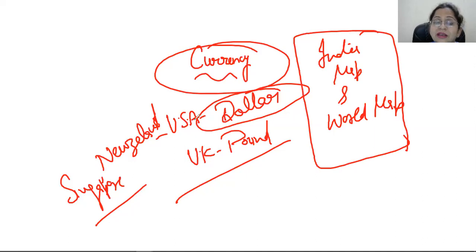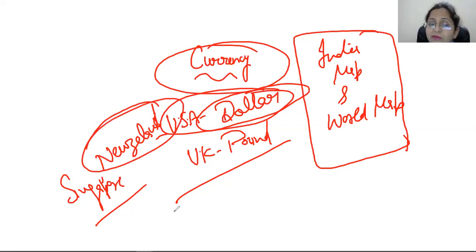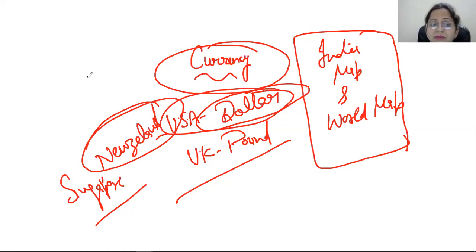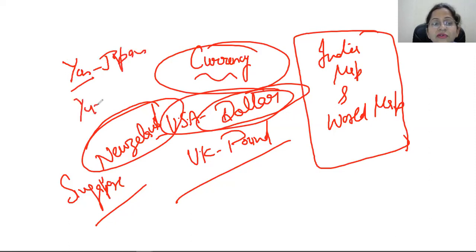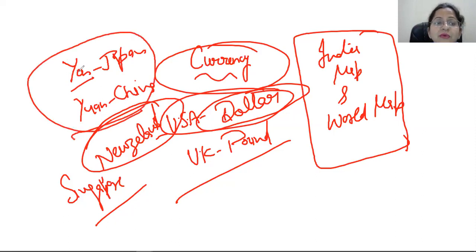The value of the US dollar is not equal to the New Zealand dollar — the value will be different from country to country, but the currency name will be the same. But some countries have a single currency, like Yen is only in Japan, and Yuan is only in China.